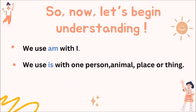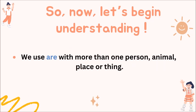Let's begin understanding. We use Am with I, and we use Is with one person, animal, place, or thing. We use Are with more than one person, animal, place, or thing.